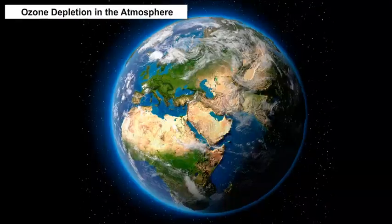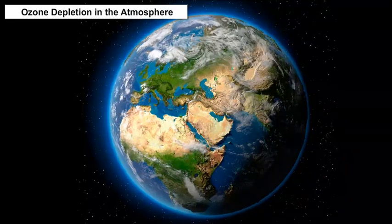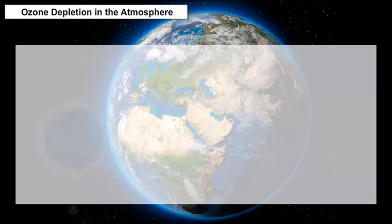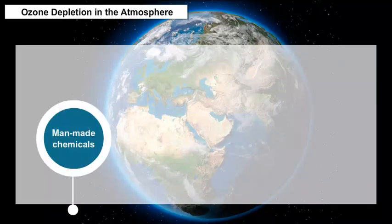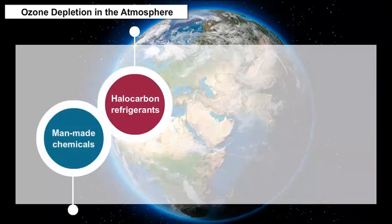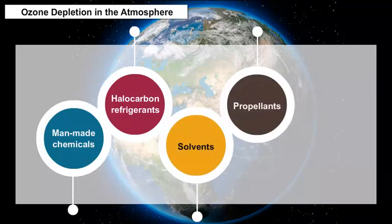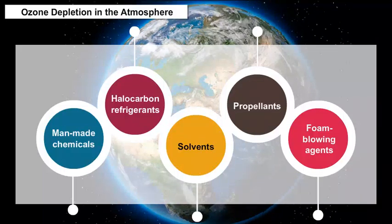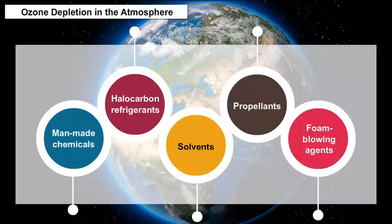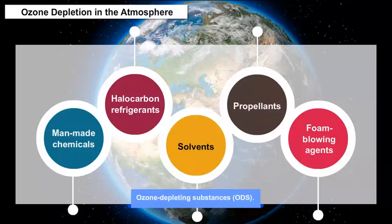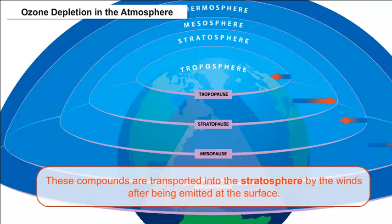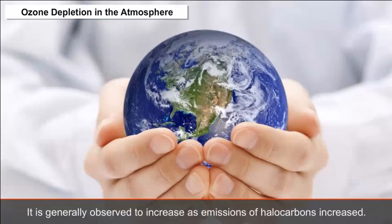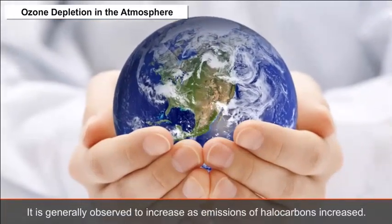Ozone Depletion in the Atmosphere: The main cause of ozone depletion and the ozone hole is man-made chemicals, especially man-made halocarbons — refrigerants, solvents, propellants, and foam-blowing agents — including chlorofluorocarbons (CFCs), HCFCs, and halons, referred to as ozone-depleting substances (ODS). These compounds are transported into the stratosphere by winds after being emitted at the surface, and depletion is generally observed to increase as emissions of halocarbons increase.